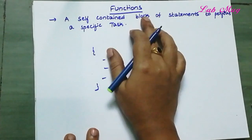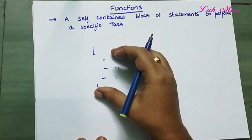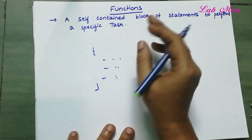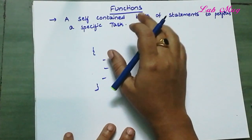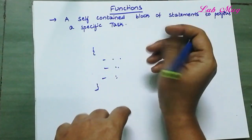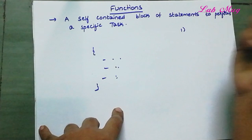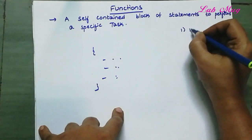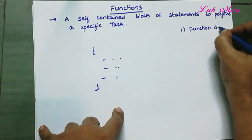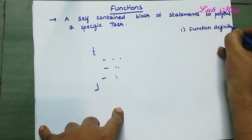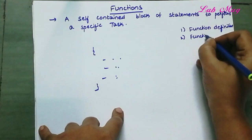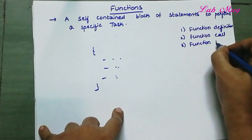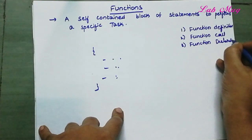To perform a particular task, we declare a function. A function is a collection of statements designed to perform a task. In a function, there are three elements: first one is function definition, second is function call, and third one is function declaration.